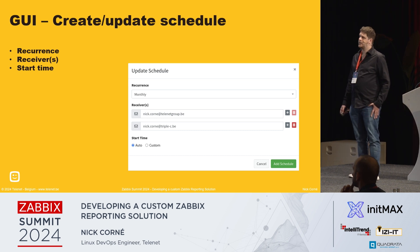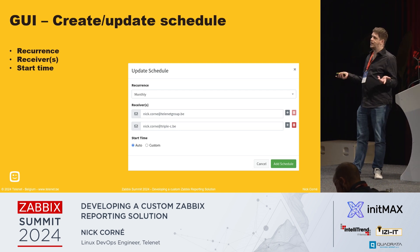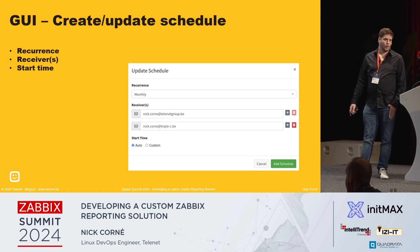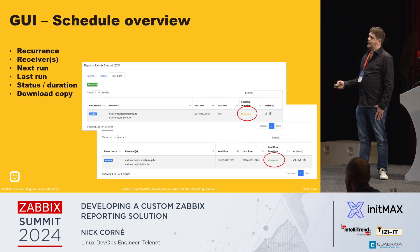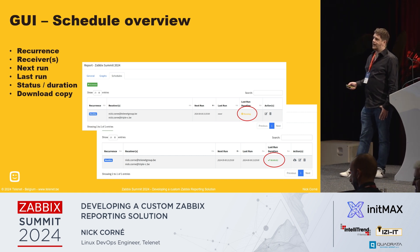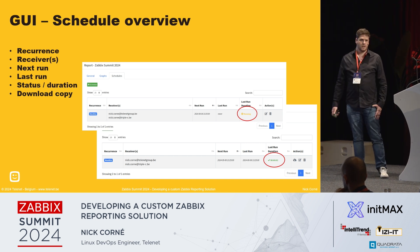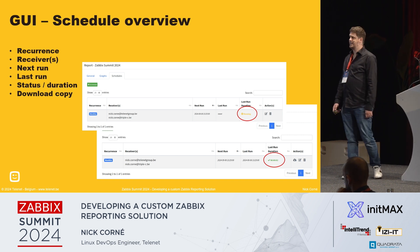And of course, schedules. You can add multiple schedules — for example, a monthly schedule sent directly to your customer, and also a weekly schedule to the responsibility team so they can do a more proactive follow-up on the environment. You can add multiple receivers to every schedule, and you see an overview of all schedules: the recurrence, the receivers, when it will run next, and when the last one was. You can also see if it's running at the moment or if it's finished. From the beginning of my talk I mentioned Avenue could take 40 minutes or two hours — we have improved on that. It's two seconds now.